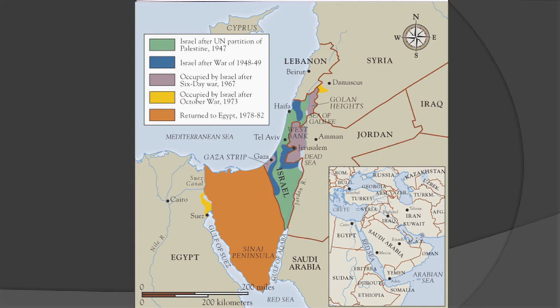This map shows us the area known as Israel-Palestine and the changing borders from 1945 till now. The inset map shows where it is located on the map of the world. It is an extremely small parcel of land, but extremely important to all three monotheistic religions: Christianity, Judaism, and Islam.